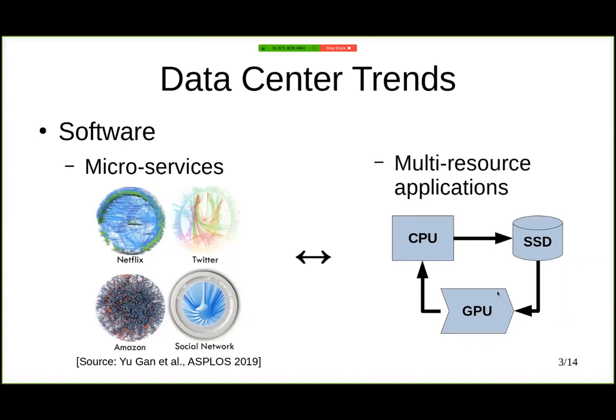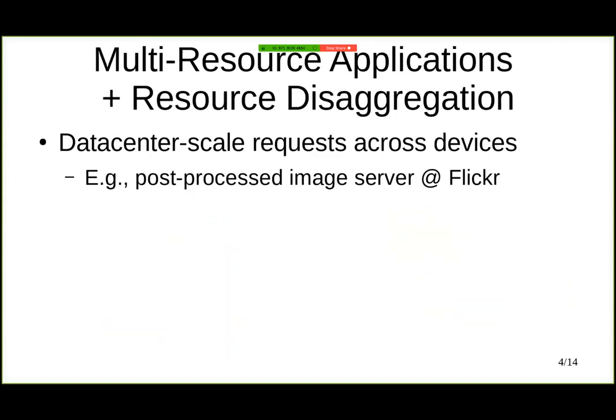So now the question is, what happens when we put together multi-resource applications and resource disaggregation? And what we're going to see is requests that go across the data center and across devices. To explain this, I'm going to use a use case from the Flickr application, which is basically a post-processed image server.